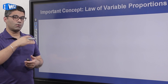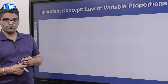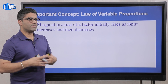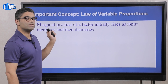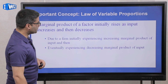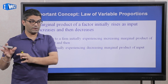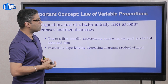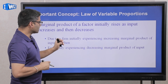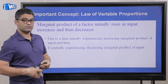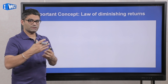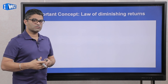Two important concepts relate to all three cases: the law of variable proportions and the law of diminishing returns. The law of variable proportions says that initially, when a business starts hiring labor, they will experience increasing marginal product due to specialization. Eventually they run into the problem of fixed inputs in the short run. These two laws are very closely correlated with each other.